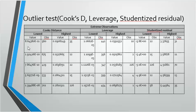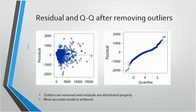After removing the outliers, we again check the residuals and the QQ plot. We see that the outliers are removed on the QQ plot and the residuals are distributed more properly. A more accurate model is achieved after removing the outliers.